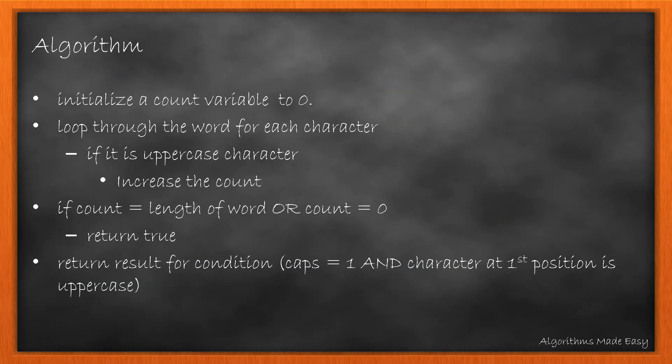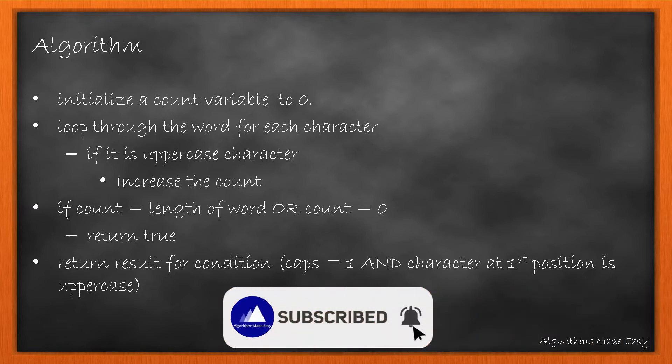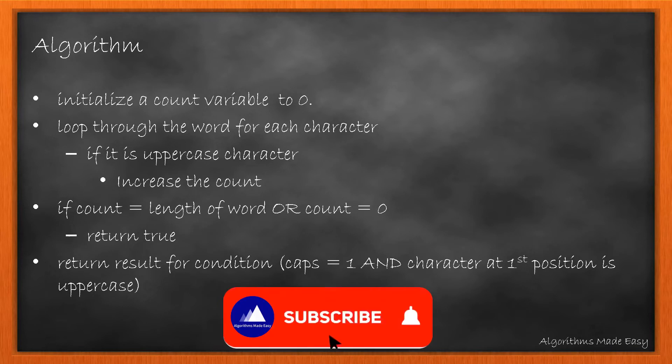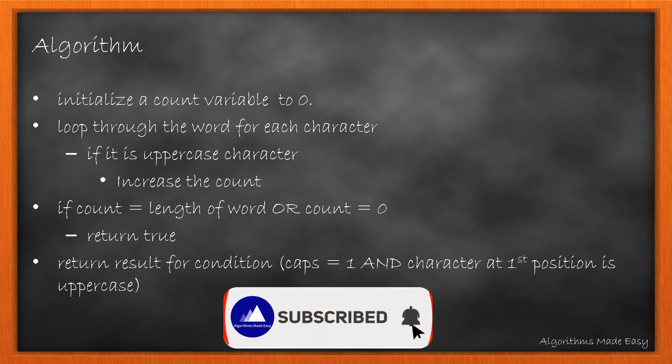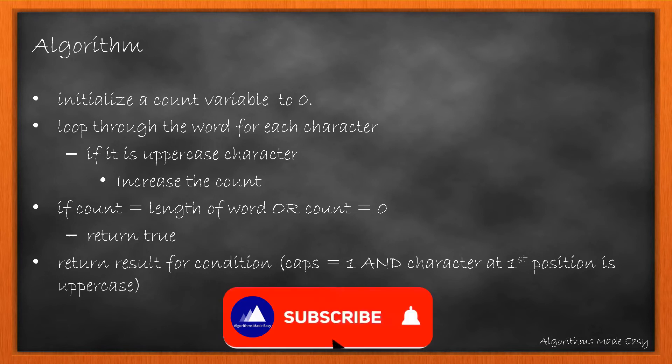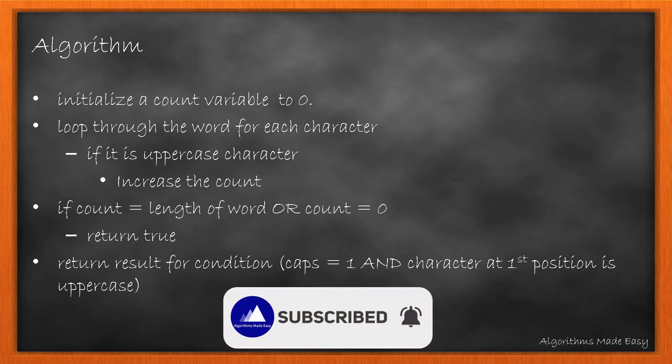Using this, the algorithm will look as follows. We initialize a count variable to store the count of all the uppercase characters and loop through each character in the word and update the count. Once we have the count, we can apply the three cases. If the count of uppercase letters is equal to the length of the word, or if the count is zero, we return true as it confirms that the word contains all uppercase or lowercase characters. If it is neither of these two, we return if the first letter in the word is uppercase and the count of uppercase letters is also one, which would mean only the first letter is uppercase.